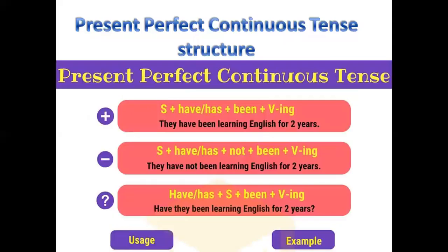Now, present perfect continuous tense. The structure is written and visible on your screen: subject plus have/has plus been plus fourth form of verb (V+ing) plus time duration using since or for. Example: 'They have been learning English for two years.' For negative, we add 'not.' This is the basic structure for beginners.